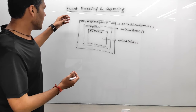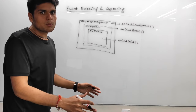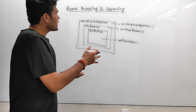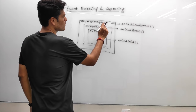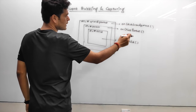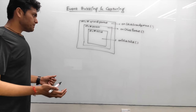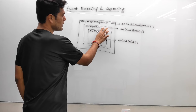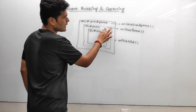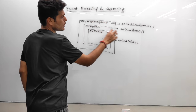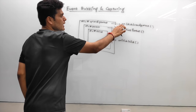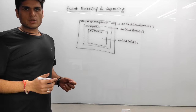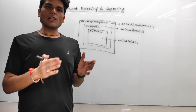Opposite to bubbling is event capturing, which goes top-down the DOM tree. All three event handlers are triggered, but in the completely opposite order: when you click the child, the grandparent click handler is called first, then parent, then child. If you click the parent div, in bubbling mode onclick-parent then onclick-grandparent are called; in capturing mode it's grandparent then parent.